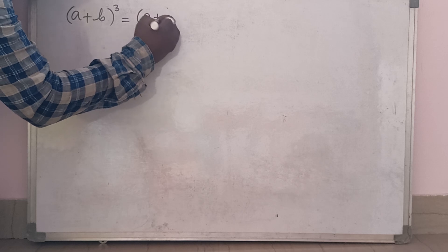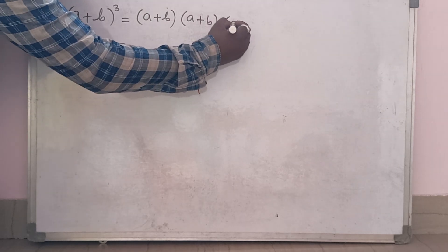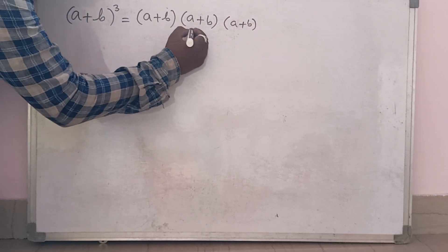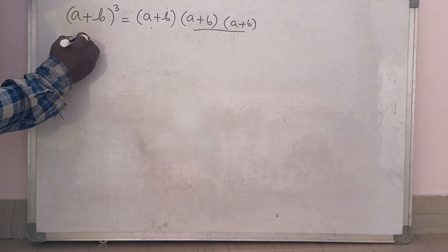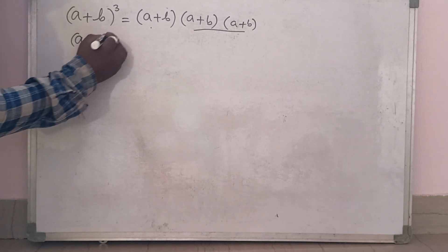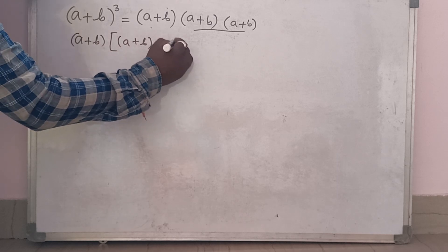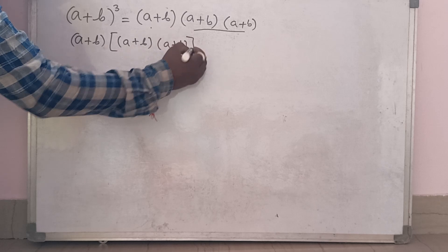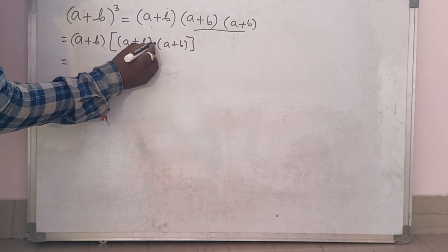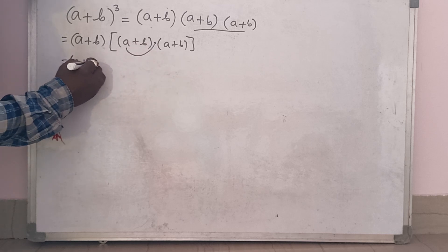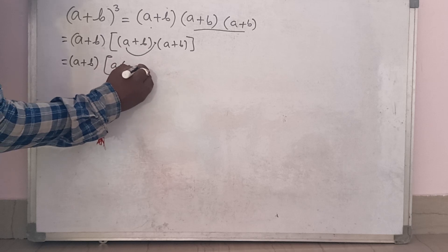Just see: a plus b into a plus b into a plus b. First, we will multiply these two and keep the third bracket as it is. So a plus b into a plus b we will do now. This a is multiplied to the whole bracket, so a plus b as it is.